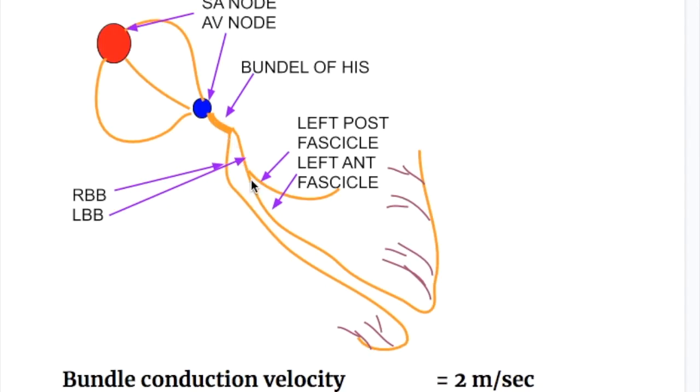What's the speed of conduction in bundle branch? Speed of conduction is 2 meters per second in bundle branch, whereas the fastest speed of conduction is in the Purkinje tissue that arises from the bundle branch, and it's 4 meters per second in the Purkinje tissue.